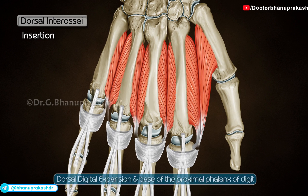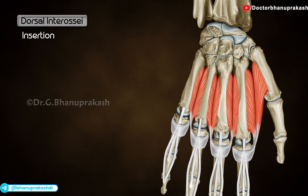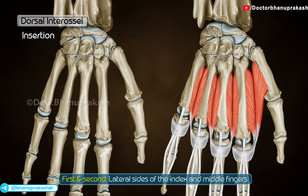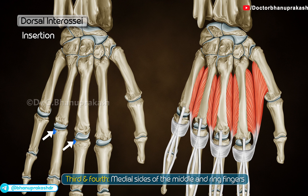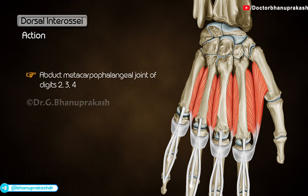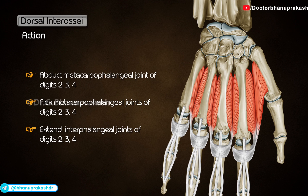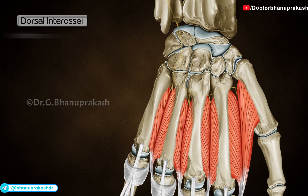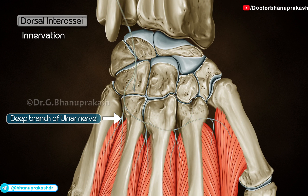Insertion is on the dorsal digital expansion and base of the proximal phalanx of the digit, of which first and second insert on the lateral sides of the index and middle fingers respectively, and third and fourth insert on the medial sides of the middle and ring fingers respectively. Actions are abduction of metacarpophalangeal joints of digits 2, 3, and 4, flexion of metacarpophalangeal joints of digits 2, 3, and 4, and extension of the interphalangeal joints of digits 2, 3, and 4. Innervation is by the deep branch of the ulnar nerve.